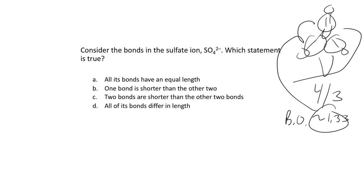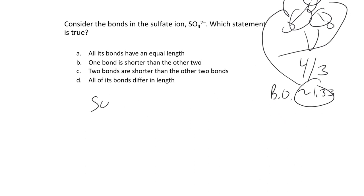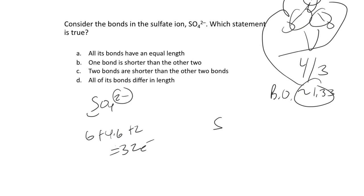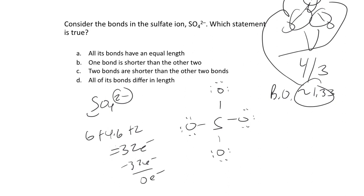Coming back to sulfate: we had two choices for Lewis structures. Sulfate has 32 total electrons — six for sulfur, four times six for oxygen, plus two for the minus-two charge. One Lewis structure satisfies the octet rule with only single bonds, following the rules of starting with single bonds and filling octets on non-central atoms. That's our octet-rule Lewis structure.